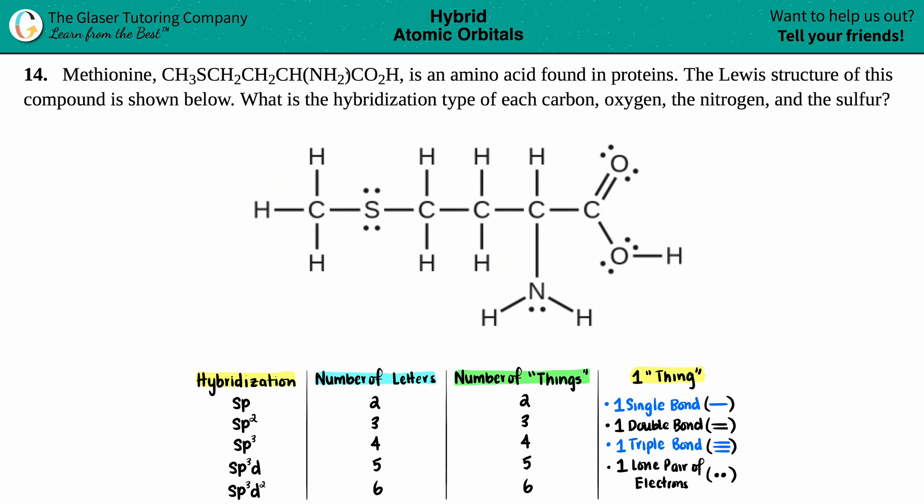So this whole thing right here. What is the hybridization type of each carbon, oxygen, the nitrogen, and the sulfur? Great question. We just have to run through those elements and find out what the hybridization of each. Now just know that hybridization and Lewis structures always go together. If they did not give us this Lewis structure, the first thing we would have had to do is draw this. Thank goodness they gave it to us. Now we can just use our information that we know from hybridization.